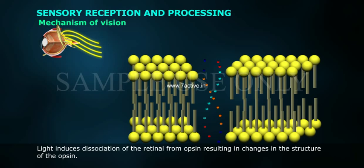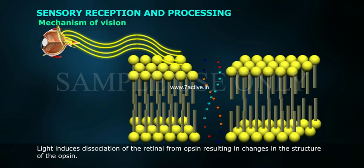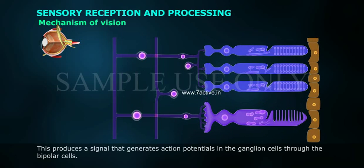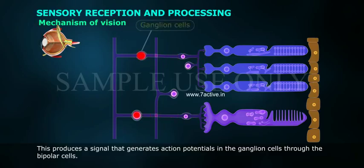Light induces dissociation of retinal from opsin, resulting in changes in the structure of the opsin protein. This causes membrane permeability changes, and as a result, potential differences are generated in the photoreceptor cells. This produces a signal that generates action potentials in the ganglion cells through the bipolar cells.